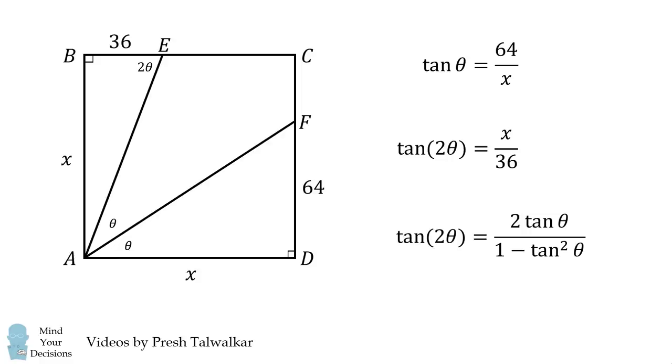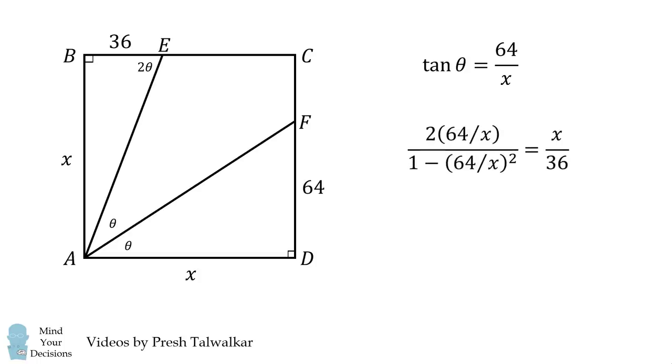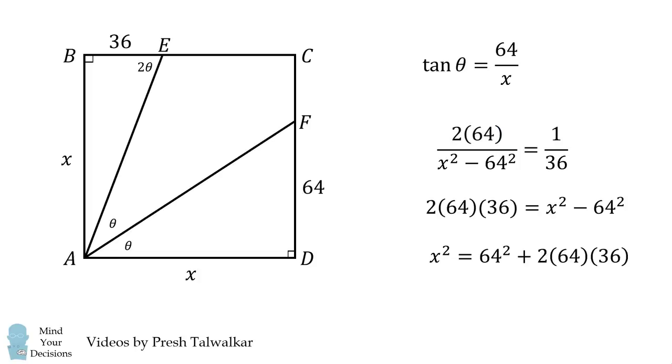We'll now use the tangent double angle formula and substitute that in. Recall, tangent of theta is equal to 64 over X, so we can substitute that into this formula. We then multiply the numerator and denominator by X squared, so we simplify this fraction a little bit. Notice that the X terms will cancel out, and then we can cross multiply and solve for X squared. We're not going to go any further, we'll just go with X squared.